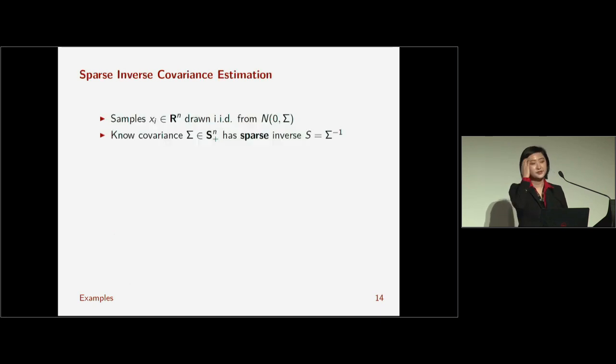So, let's go to a more involved example. Now that you know the basic syntax of CVXR, we're going to solve the sparse inverse covariance estimation problem. We're given samples, X sub i, X sub i are in vectors, drawn iid from our normal distribution, centered at zero with some unknown sigma covariance matrix. All we know about the covariance sigma is that it has a sparse inverse, which we will call S, and we want to estimate S.